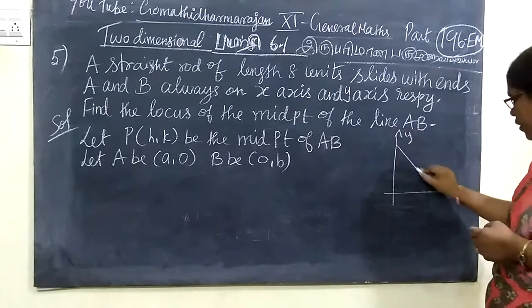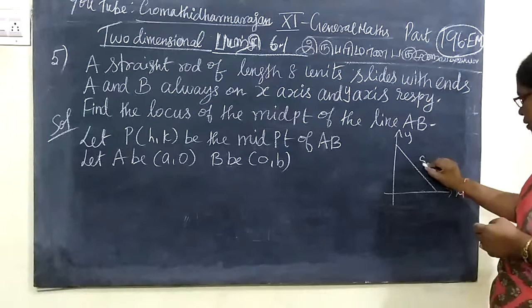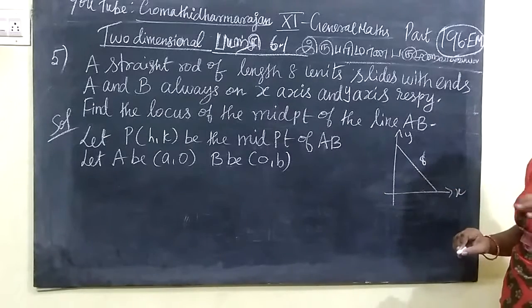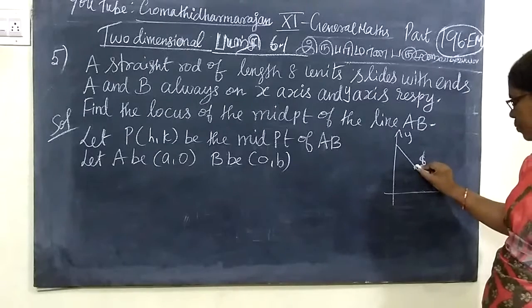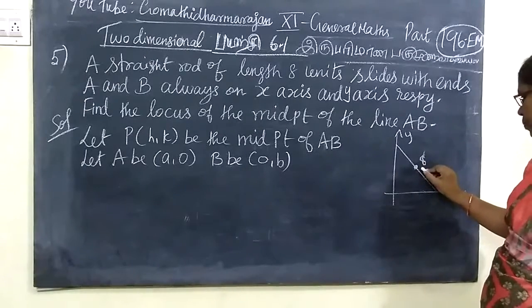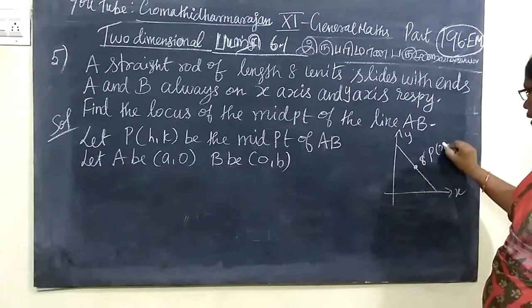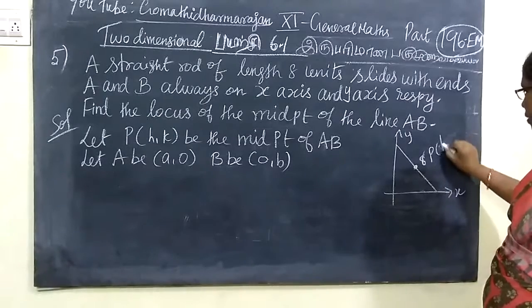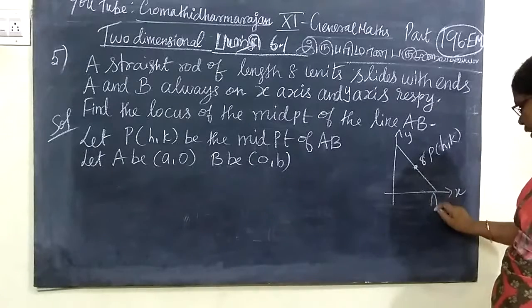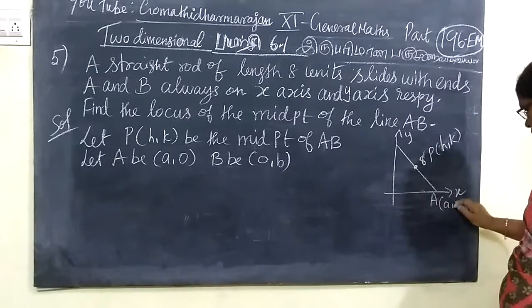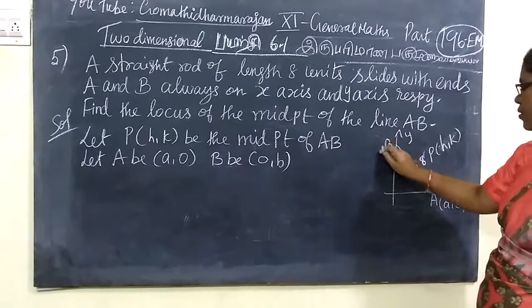You have given a rod of length 8 units. The midpoint is going to be P(x, k). Let A be (a, 0) and B be (0, b). A is on the x-axis, so the y-coordinate is 0.